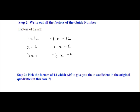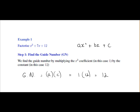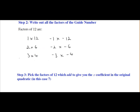On to step 3, we have to pick the factors of 12 which add to give you the x coefficient in the original quadratic. We can see that the x coefficient here is 7, it's the number beside the x. So we have to pick out the factors of 12, the guide number, that add up to the x coefficient which is 7 in this case. If we analyze the factors here, the set of factors that add up to 7 are 3 and 4.